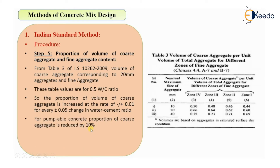For pumpable concrete, the proportion of coarse aggregate is reduced by 10%. For example, if the value was 0.60 after adjustment for water cement ratio, and the concrete is pumpable, you reduce it by 10%. This concept will be understood better in the numerical examples in the next videos.